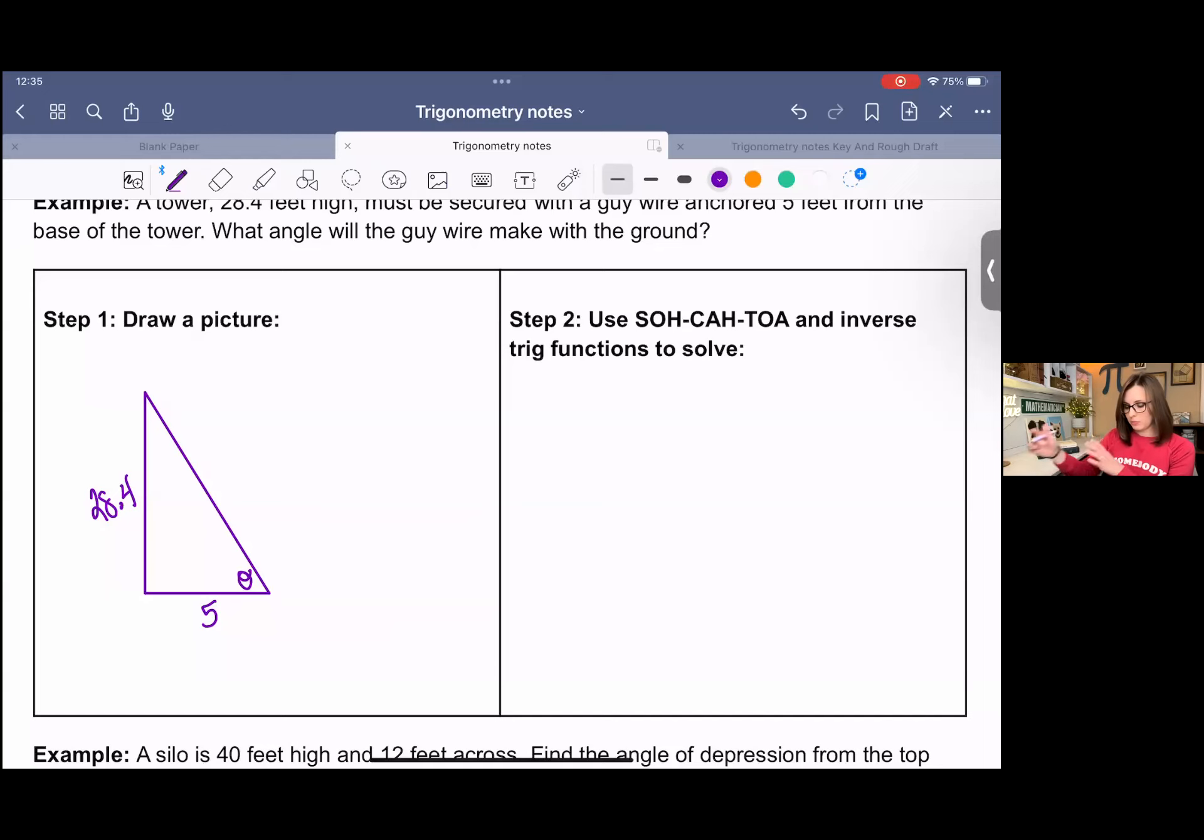So to give some reference here, we have a right angle. This is going to be the hypotenuse. From the angle we're looking for, 28.4 is the opposite and five is the adjacent. And we can use SOH-CAH-TOA to figure out which trig function is going to be helpful to us in this situation.